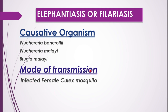The mode of transmission is the infected female Culex mosquito. We have come across different types of mosquitoes like Anopheles and Aedes. Here we come across yet another species — the Culex mosquito — which is the mode of transmission for filariasis.